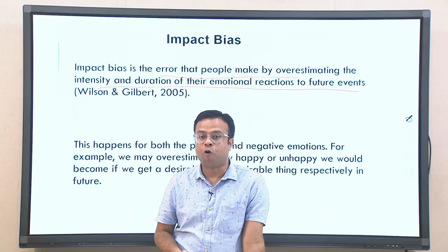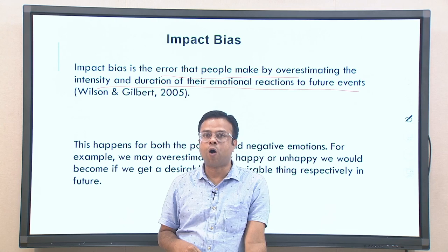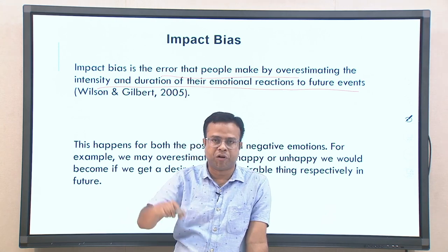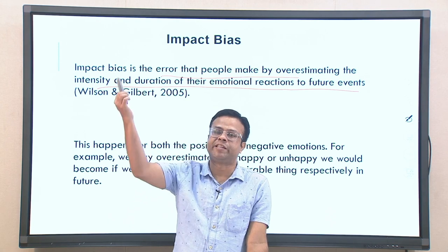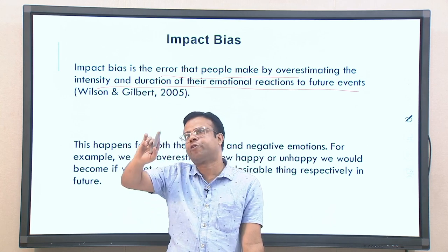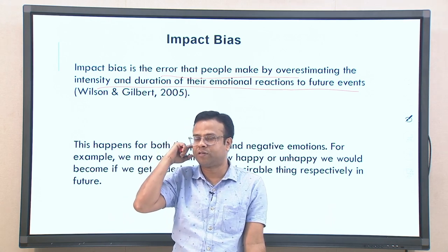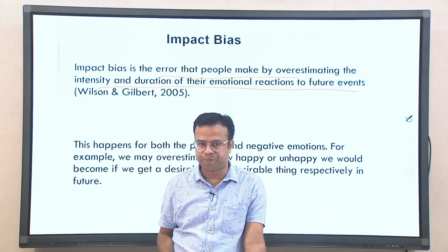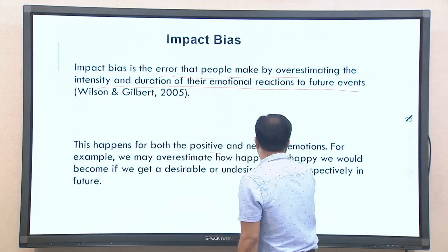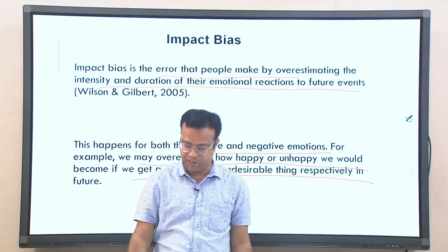Impact bias is the error people make by overestimating the intensity and duration of their emotional reaction to future events. When you get a dream object, people generally overestimate how happy they will be or how long that happiness will last. In actuality the happiness is less intense and shorter-lived than predicted. This happens for both positive and negative emotions — we overestimate how happy or unhappy we would become with desirable or undesirable things respectively.